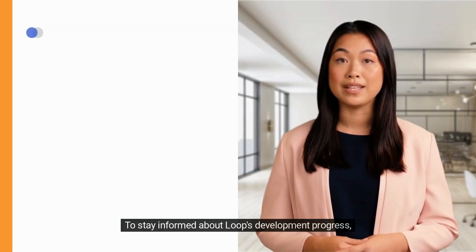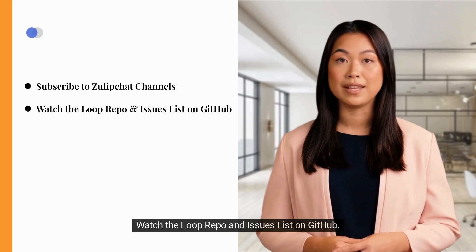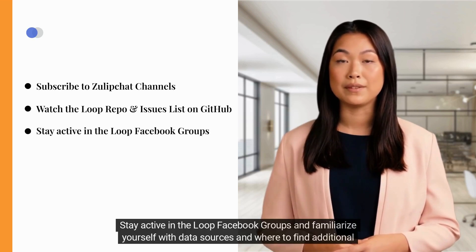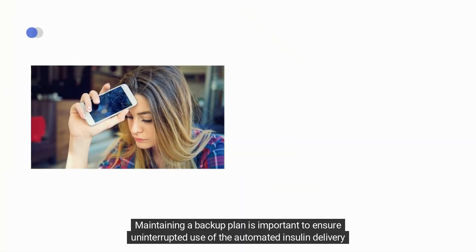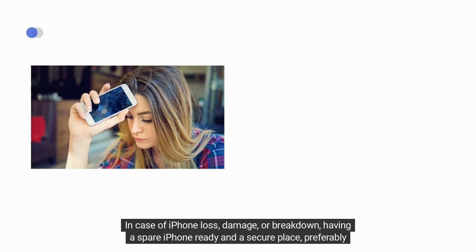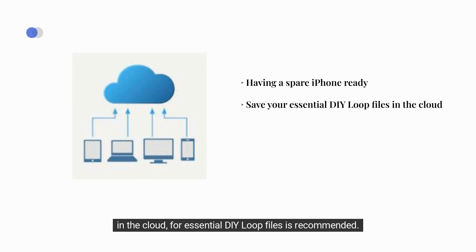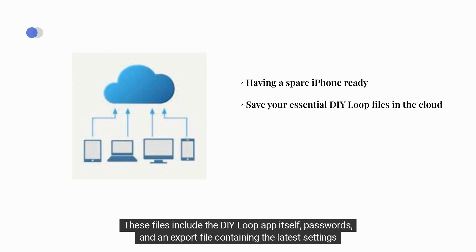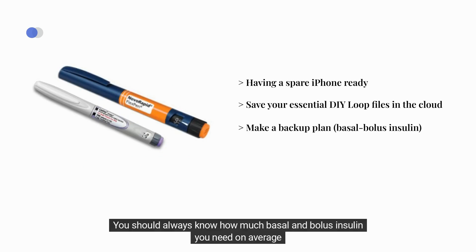To stay informed about Loop's development progress, users can subscribe to Zulip Chat channels for updates and discussions, watch the Loop repo and issues list on GitHub, and stay active in Loop Facebook groups. Maintaining a backup plan is important to ensure uninterrupted use of the automated insulin delivery system. In case of iPhone loss, damage, or breakdown, having a spare iPhone ready and a secure cloud location for essential DIY Loop files — including the app itself, passwords, and an export file with the latest settings — is recommended. Also make a backup plan for when your insulin pump fails; always know your average basal and bolus needs and be ready to switch to insulin pens in an emergency.